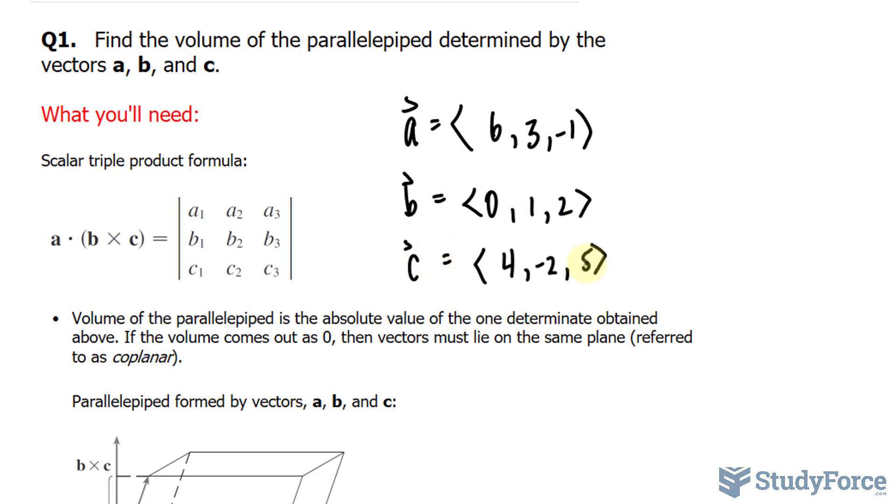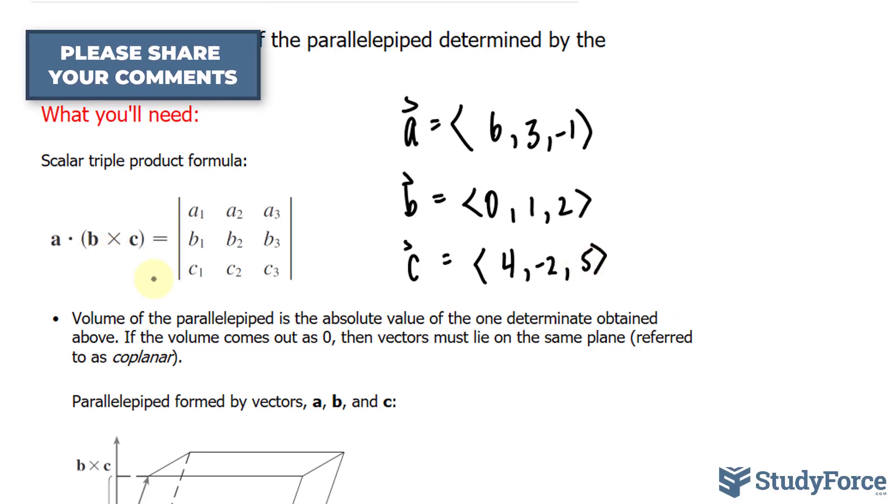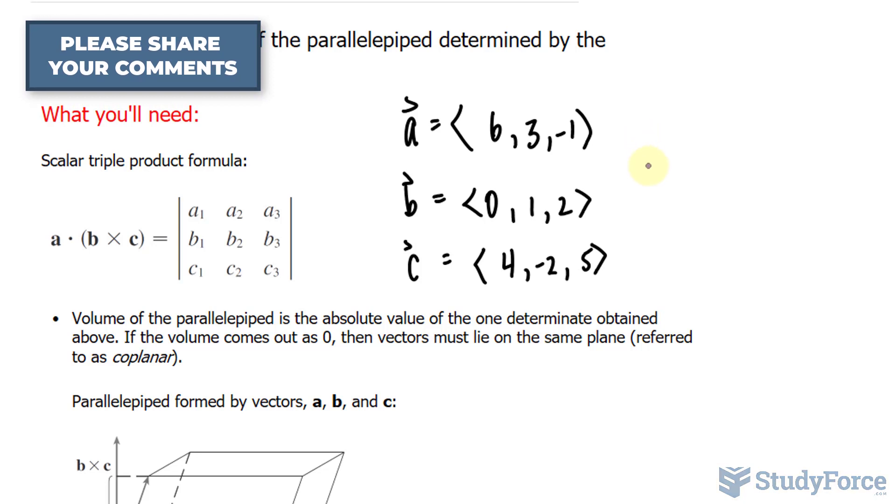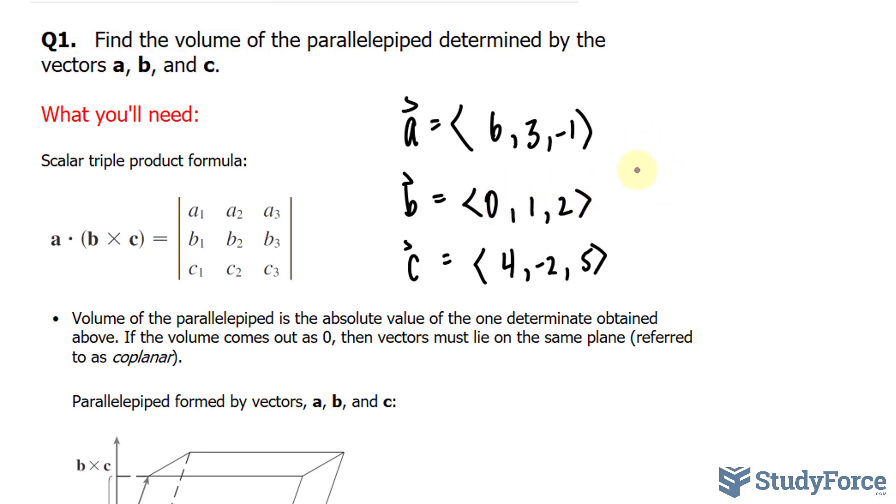So what I'm going to do is find the cross product of b and c. And that can easily be done by using this little trick where you write this out twice, 0, 1, 2, 0, 1, 2, 4, negative 2, 5, 4, negative 2, and 5.